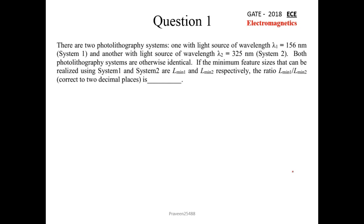Question number one: There are two photolithography systems — one with light source of wavelength λ₁ = 156 nanometers and another with wavelength λ₂ = 325 nanometers. Both systems are otherwise identical. If the minimum feature sizes that can be realized using system 1 and system 2 are L1 and L2 respectively, find the ratio L1 to L2.